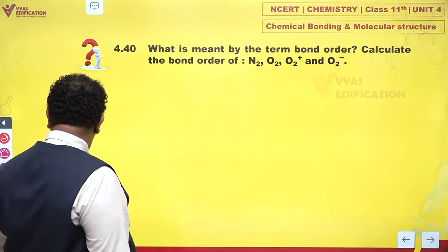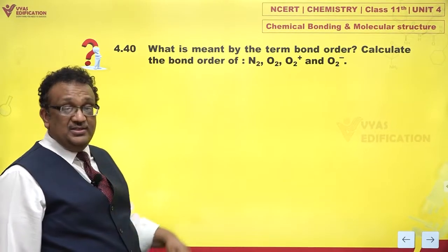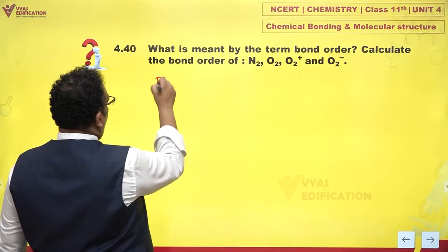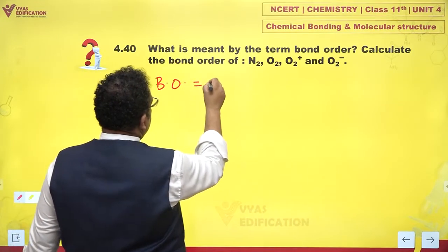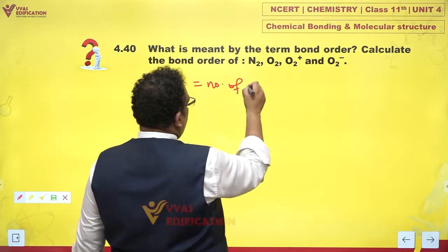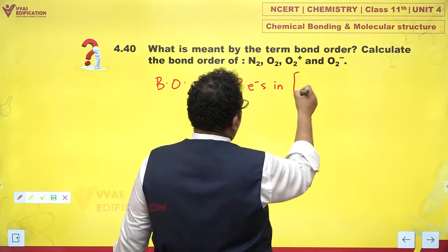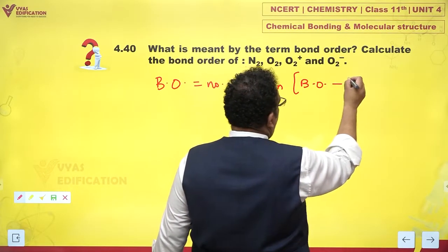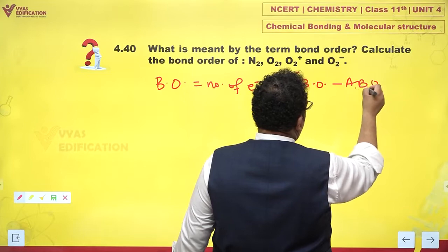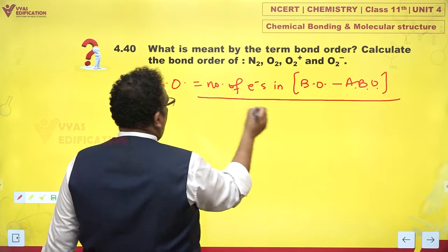And how do we calculate this? In MO theory, we calculate bond order by a formula. This is number of electrons in bonding orbital minus antibonding orbital upon two.